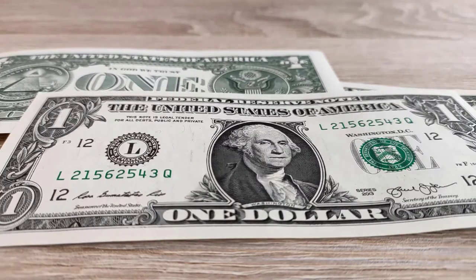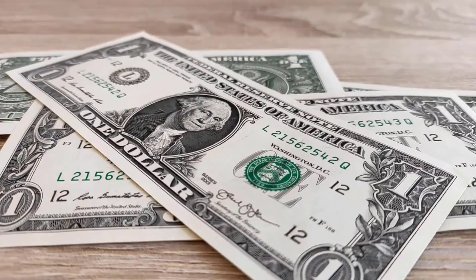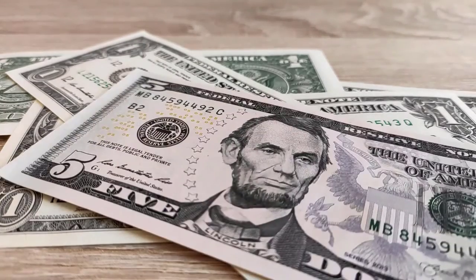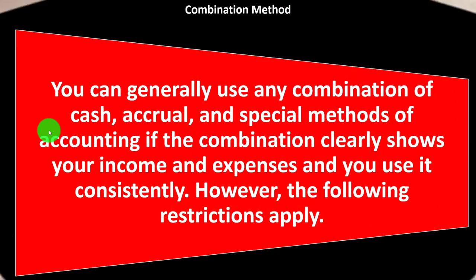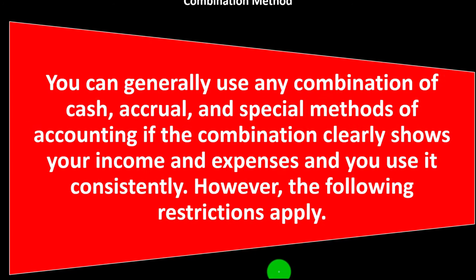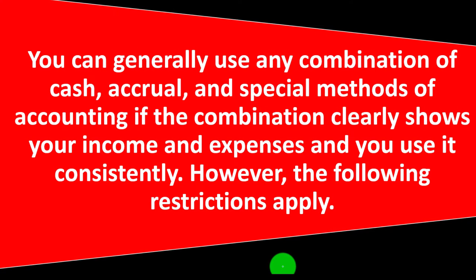We don't want to think of the cash and accrual methods as if they're two completely different poles. There's a spectrum and you could have different areas within it. You can generally use any combination of cash, accrual, and special methods of accounting if the combination clearly shows your income and expenses and you use it consistently. Consistency is the key term.